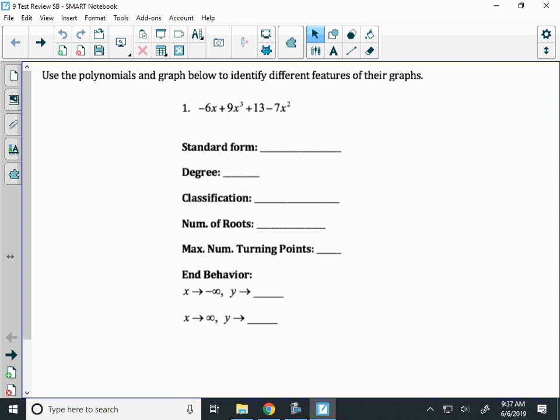We're going to put this into standard form. I start with the highest exponent, which here is 9x to the third. Then I have negative 7x squared, that's the next highest, minus 6x, and then finish with plus 13.